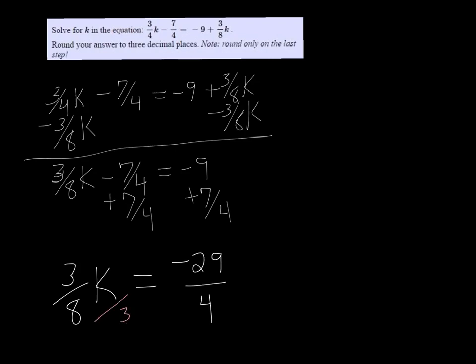Finally, we need to divide both sides by 3/8. And then k gets by itself, and so -29/4 divided by 3/8 is -58/3.